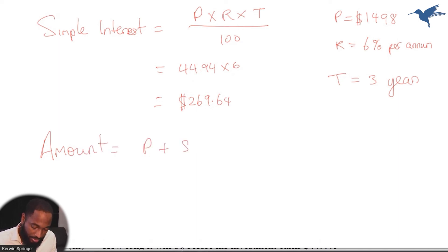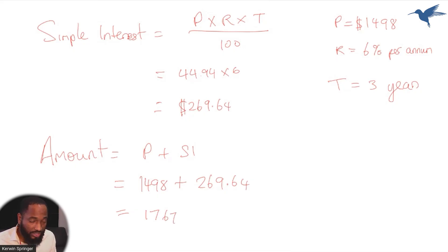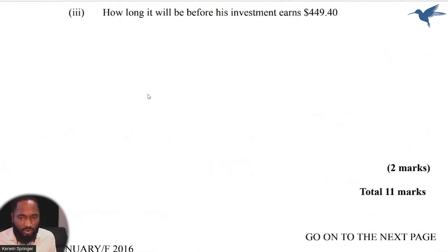So the amount, remember there's an initial amount he invested, would be the principal plus the simple interest. So it's 1498 plus 269.64, and in the end this gives me, how much does this give me? $1767.64. You'll get this number. So this is the amount.